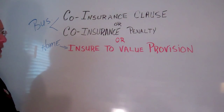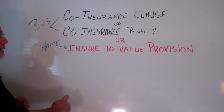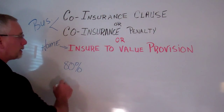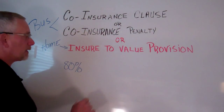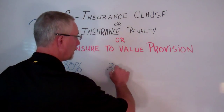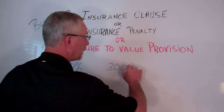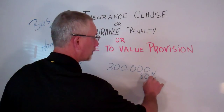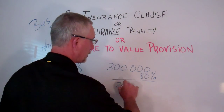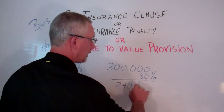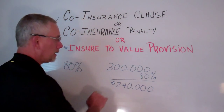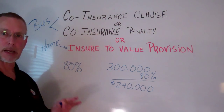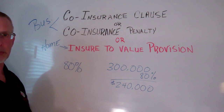The co-insurance on a homeowner's policy is generally required to be at 80%. For example, if you have a $300,000 home, you need to have at least 80% coverage to meet the replacement cost requirement — that would be $240,000 insurance on the home. If you do not carry that, then you are subject to the co-insurance penalty.